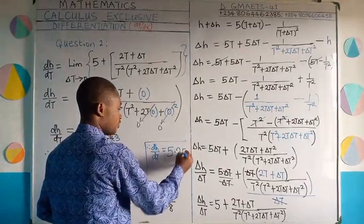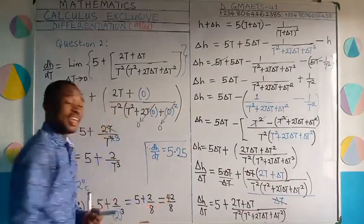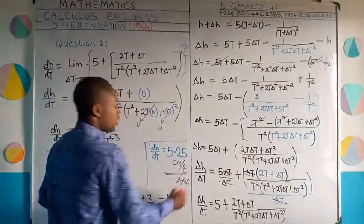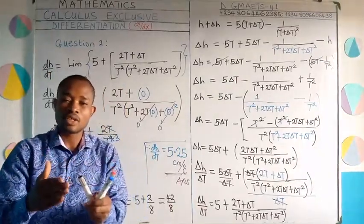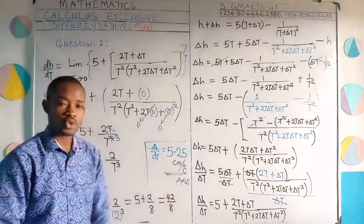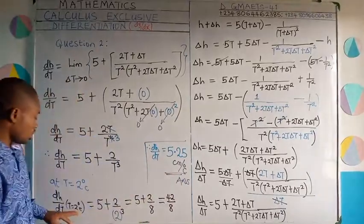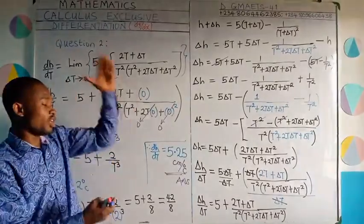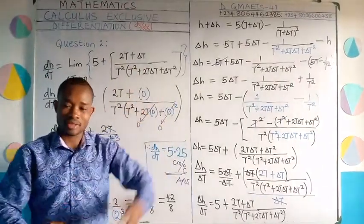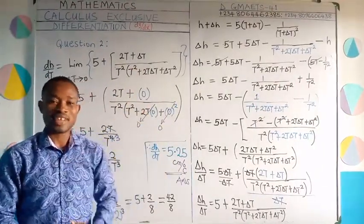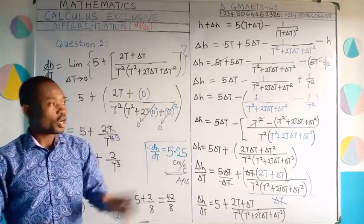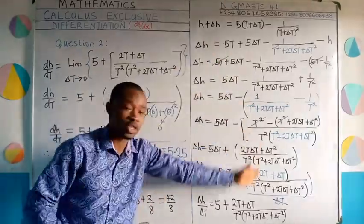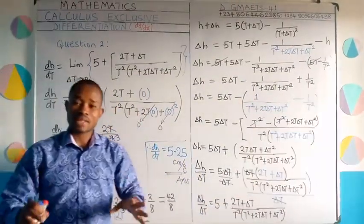The answer is 5.25 cm per degree Celsius. This is the rate at which the height of the thermometer's liquid will change when the temperature is 2 degrees centigrade. It means that at 2 degrees centigrade, the height of the liquid will increase by 5.25 cm. You can replay the video and listen to all the explanations, especially where we do the main work. We'll be going to our last question for the class.